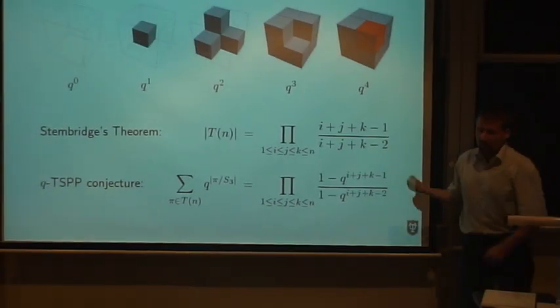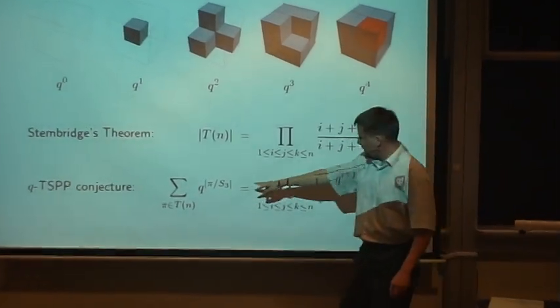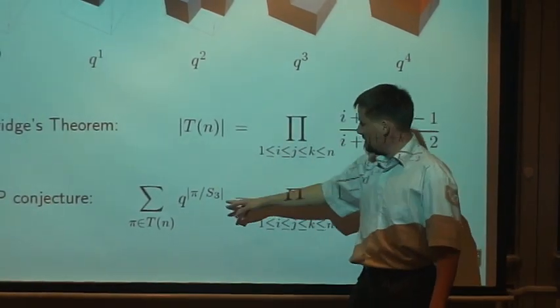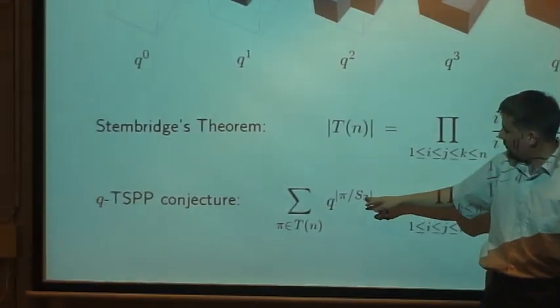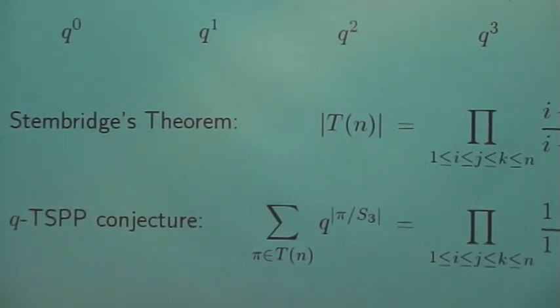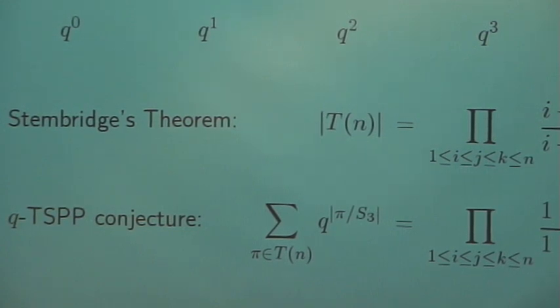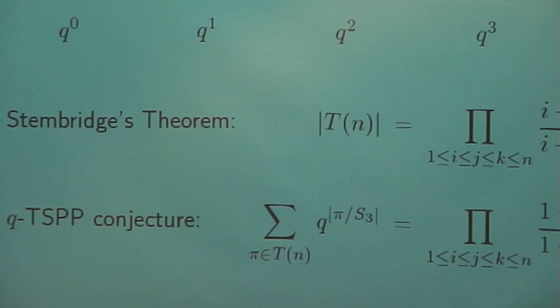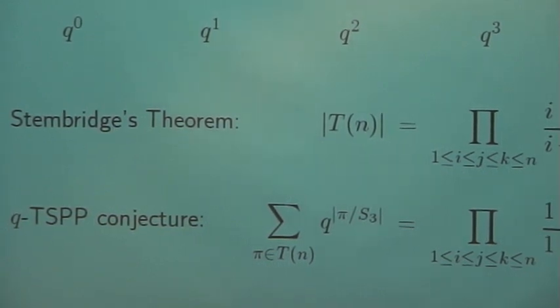So this is how it works. This notation is just like what I explained - we consider the action of the symmetric group S3 on these plane partitions. Question so far? This is just the combinatorial background.